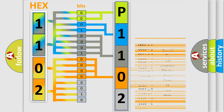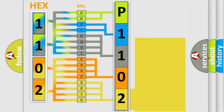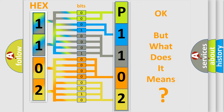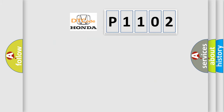A single byte conceals 256 possible combinations. We now know in what way the diagnostic tool translates the received information into a more comprehensible format. The number itself does not make sense to us if we cannot assign information about what it actually expresses. So, what does the diagnostic trouble code P1102 interpret specifically for Honda car manufacturers?